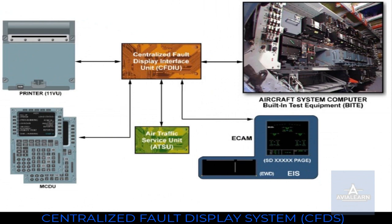Centralized Fault Display System, CFDS. The Centralized Fault Display Interface Unit, CFDIU, centralizes and memorizes all information concerning aircraft system failures. Reading or printing of the failure information is done in the cockpit with any Multipurpose Control and Display Unit, MCDU, or the printer. Most aircraft system computers have a built-in test equipment, BITE. The BITE permanently monitors the system operation. When a failure is detected, it is stored in the BITE memory and transmitted to the CFDIU. The EECOM, which generates warning and status messages, delivers this data to the CFDIU as well. The failure information is available in various reports, read from two different MCDU menus depending on whether the aircraft is in flight or on ground.